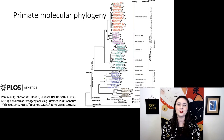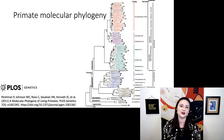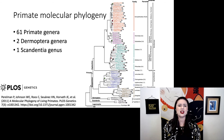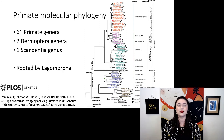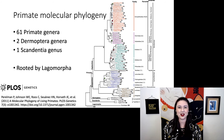If you want to look at one of the most recent molecular phylogenies for primates, Perelman et al. 2011 did a very comprehensive primate tree, and it is the most comprehensive one to date. They have 61 different primate genera, including two Dermoptera genera, and they even have one Scandentia genus. This is all rooted by Lagomorpha, or our rabbits, and you can see how we have the different major groups of primates arranged. If you're interested, I highly recommend you go check out this publication.